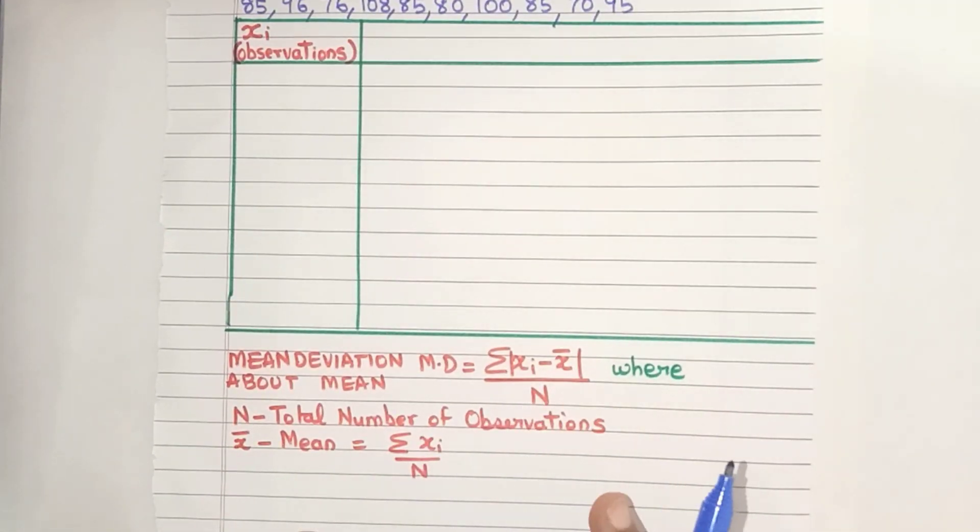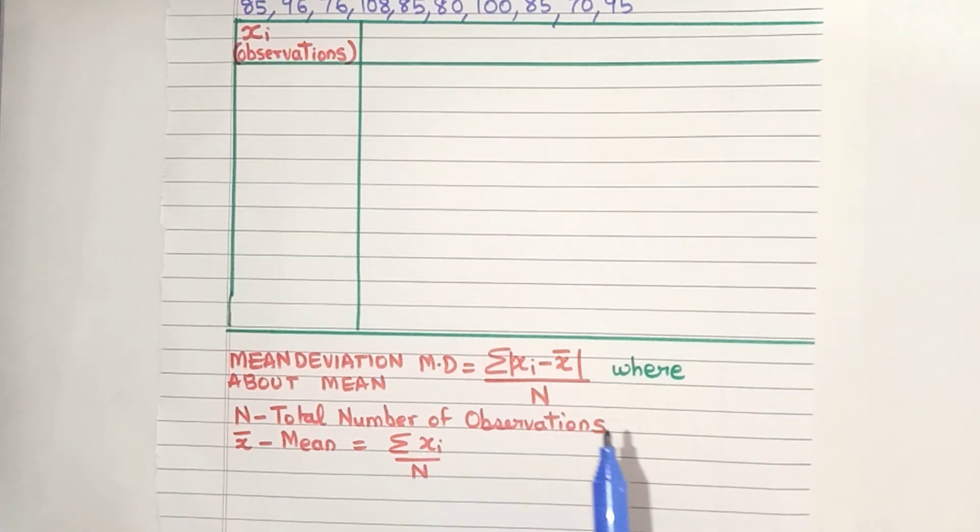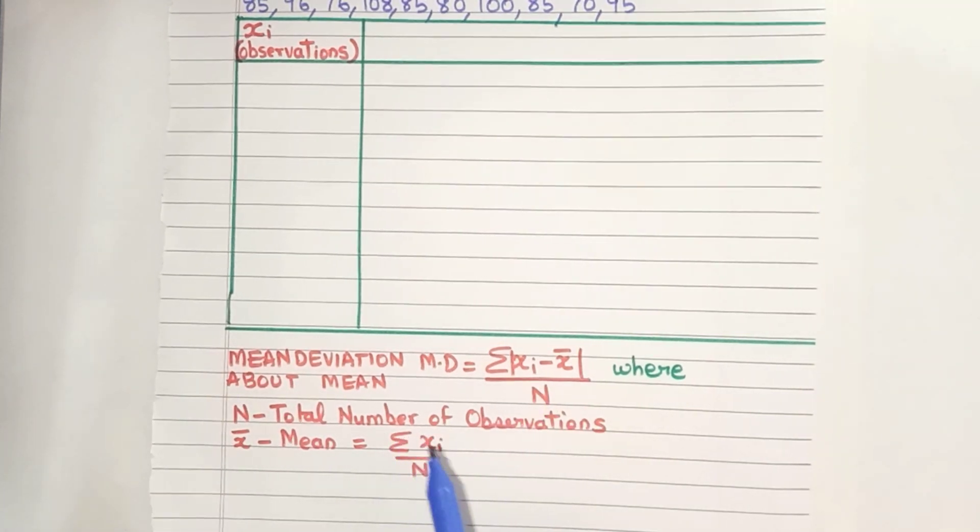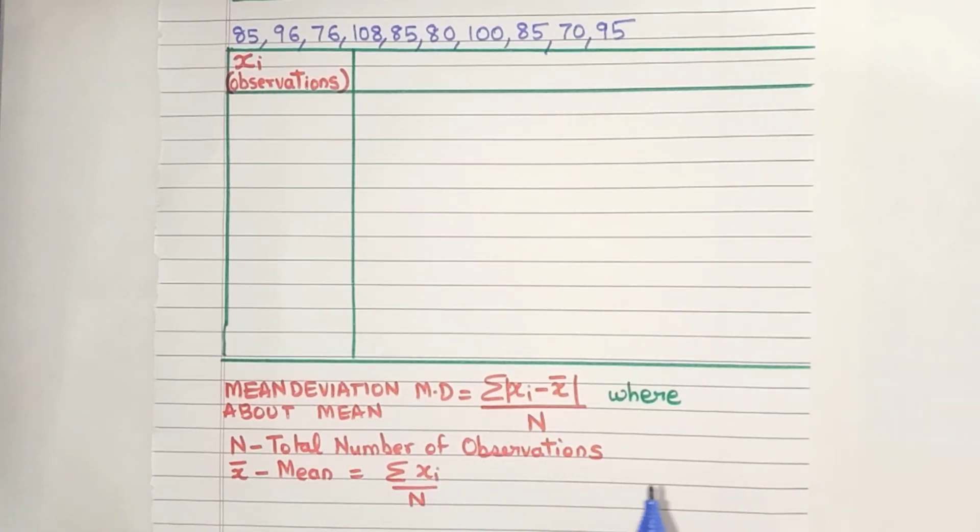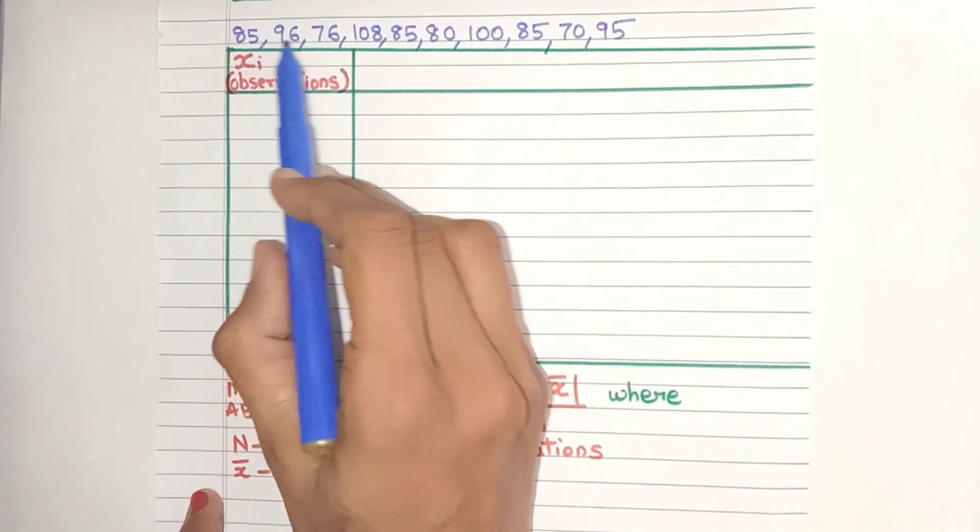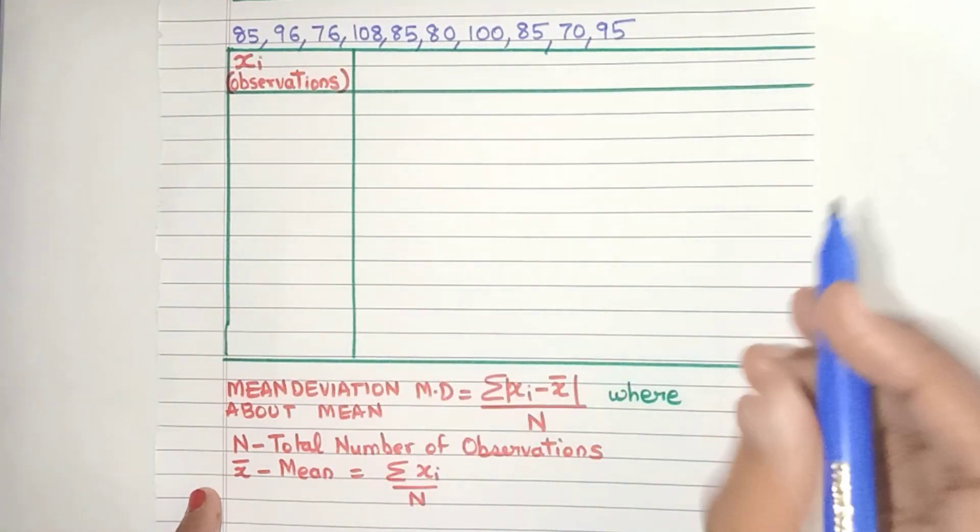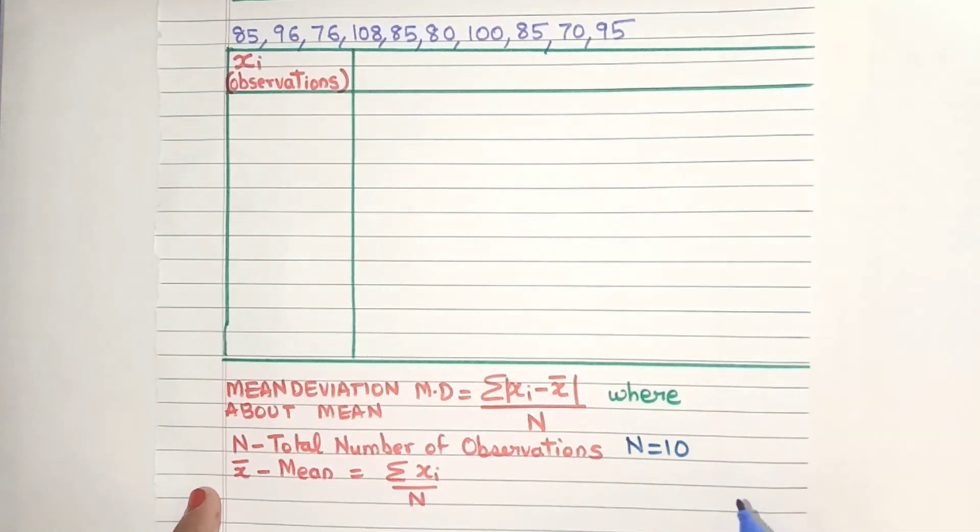Before we can use this formula, we need to find out all these values. First, let's see what is n. n is nothing but the total number of observations. So let's count how many observations are there. Yes, there are 10 observations, so n is 10.